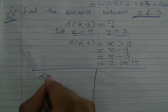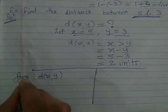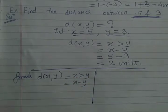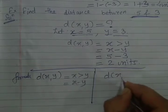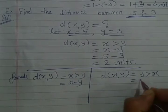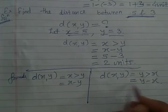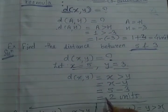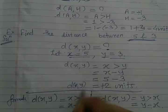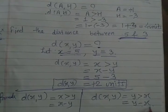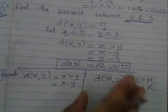Remember the two formulas: distance between x and y — if x is greater than y, then x minus y. If y is greater than x, then y minus x. We do this because distance will never be negative. Distance should always be positive. Always subtract the smaller number from the bigger one.